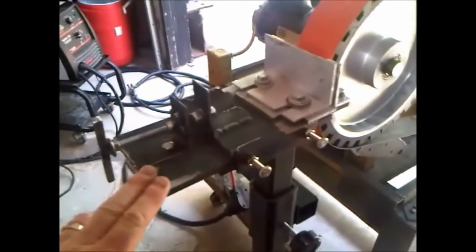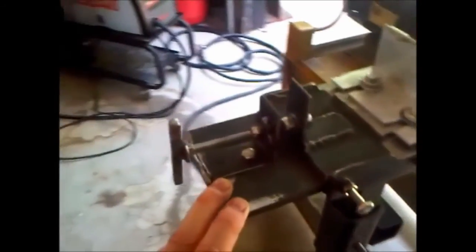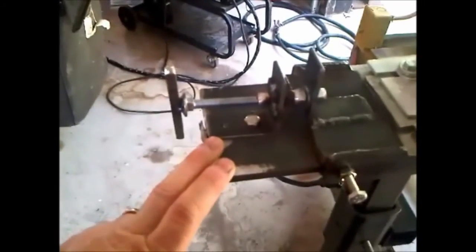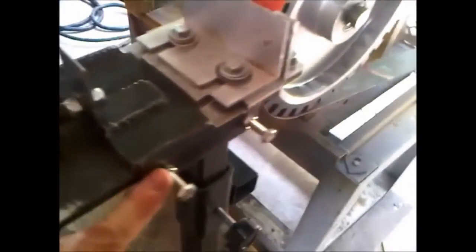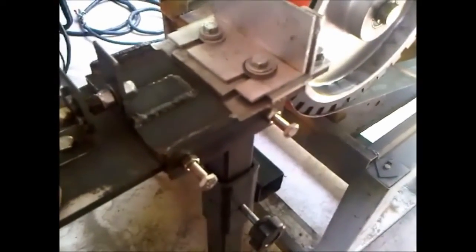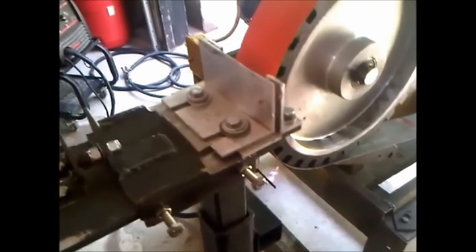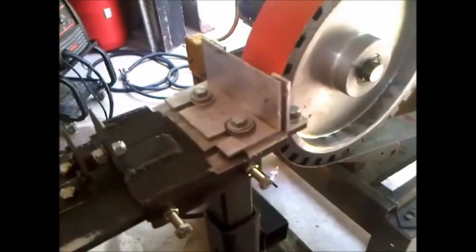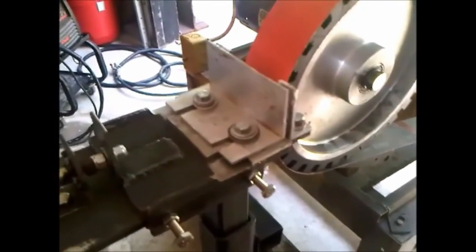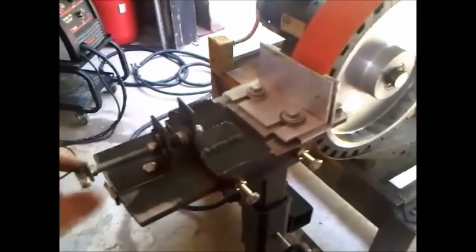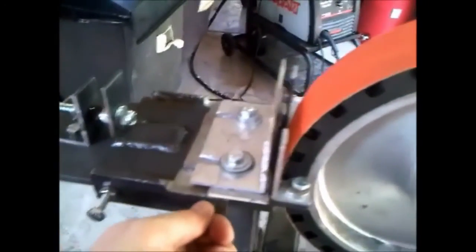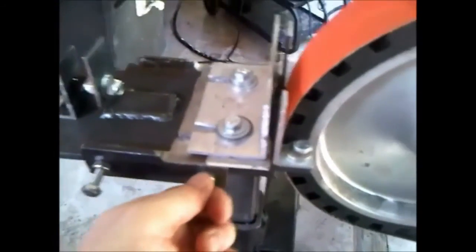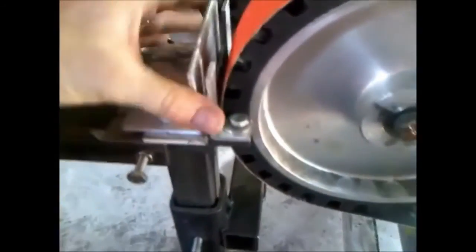I made modifications since the last video. I've added these two little set screws to take the slack out of the slide. Now it slides nice and smooth. There's no slop in the machine, so the jig is straight inside.